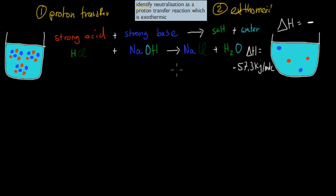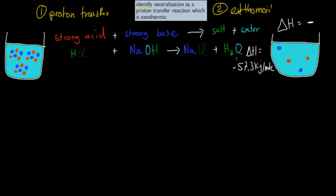First, I'll talk about what happens when we have a strong acid acting with a strong base. Remember from the last video: if we have a strong acid and a strong base coming together, we form a salt and water. And overall, that's what a neutralization reaction is.